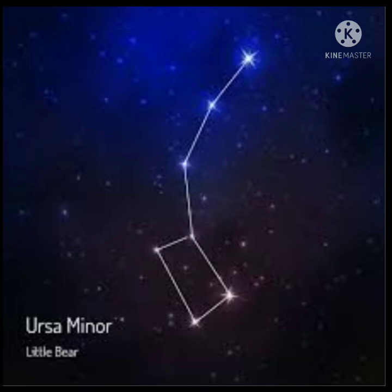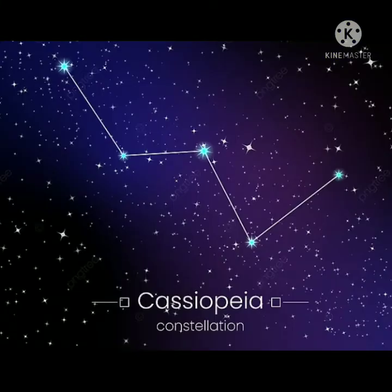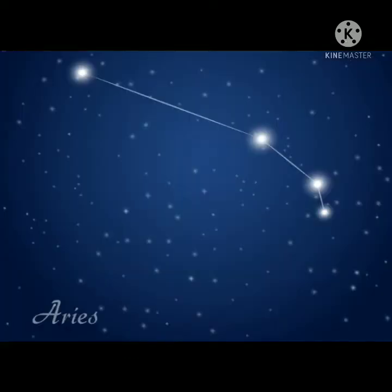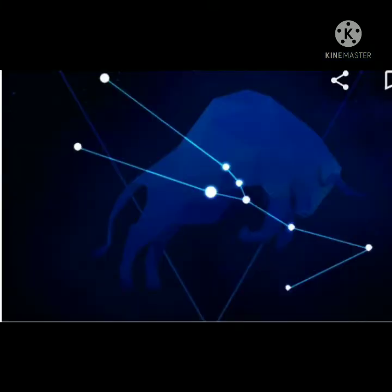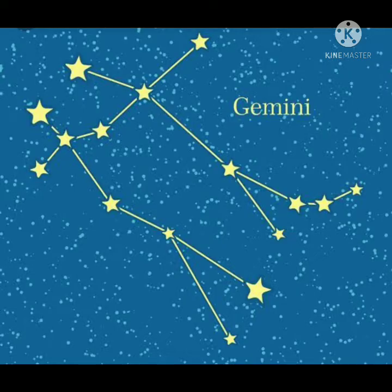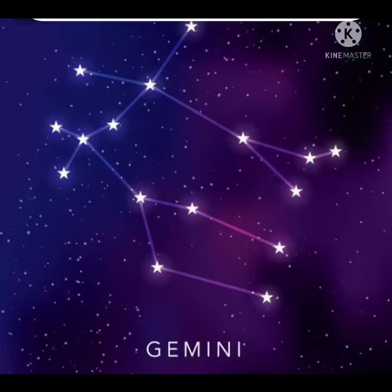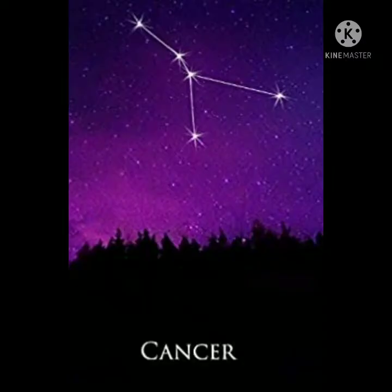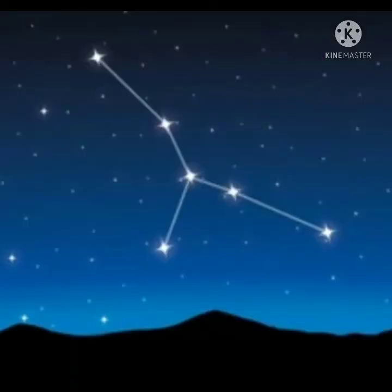Other constellations include Ursa Minor or Small Dipper, and Cassiopeia, which is visible in autumn. The 12 constellations of the zodiac are Aries, Taurus, Gemini, Cancer, Leo, Virgo, Libra, Scorpius, Sagittarius, Capricornus, Aquarius, and Pisces. You can see the various constellations of the zodiac in the slide — these are probably familiar to you through astrology.